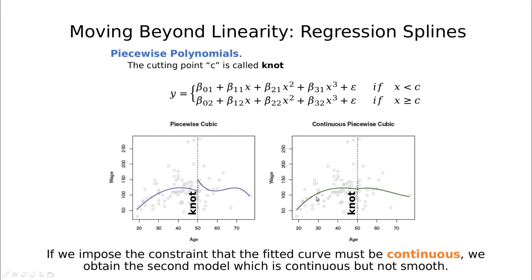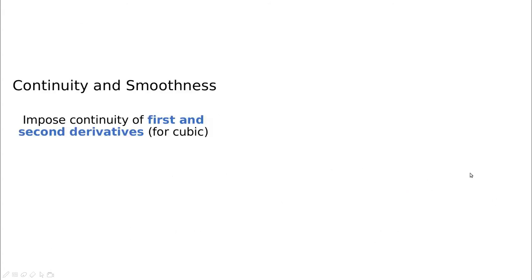But we have another problem here. You can see that continuity is not enough. We don't like these sort of steps, these sort of jumps here. This doesn't guarantee that we're going to have a smooth function. And this is when we have to impose several constraints.